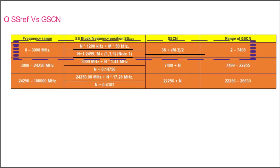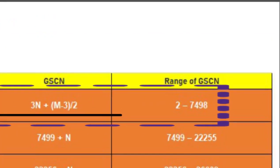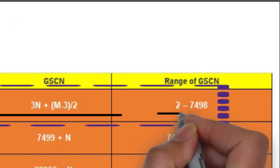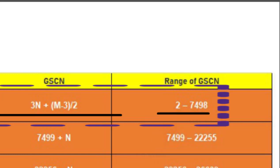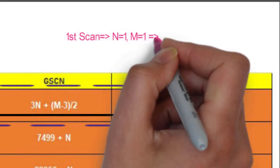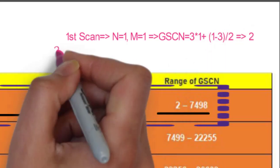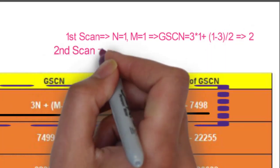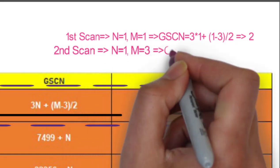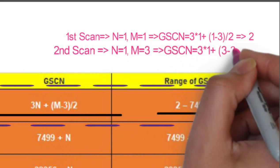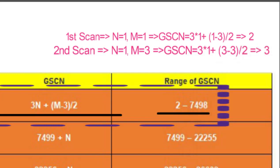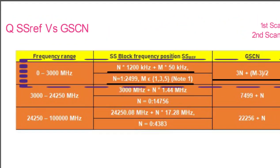The GSCN formula for 0 to 3000 MHz range is: GSCN = 3N + (M−3)/2. So the range of GSCN is 2 to 7498. For example, if N=1, M=1, then GSCN = 3 + (1−3)/2 = 2. If N=1, M=3, then GSCN = 3.